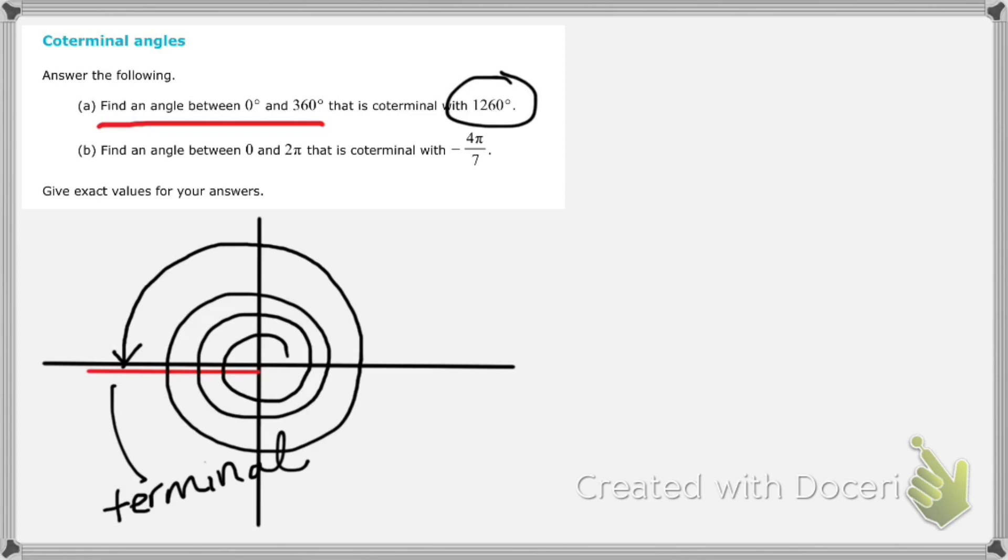And that's simply this. If I rotate around, around, around, and then stop, how much is that angle? That angle is 180 degrees. It is coterminal. It ended up at the same place, and it is between 0 and 360 degrees.